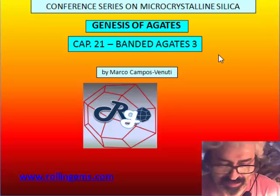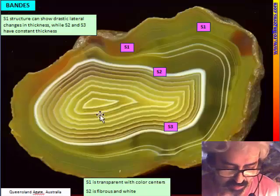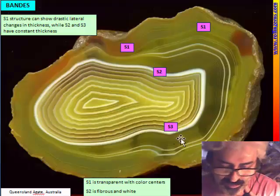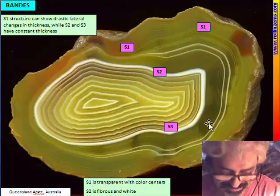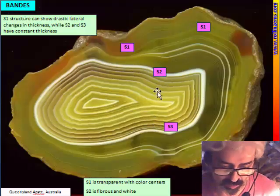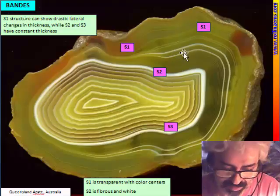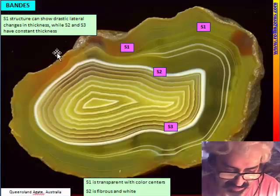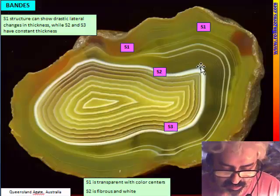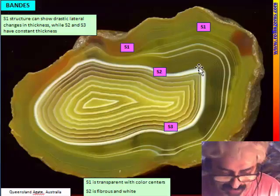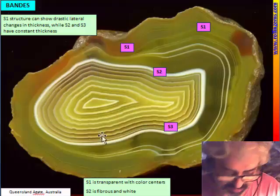We continue here talking about band agate, that is a very interesting argument. We start to make a deeper analysis of the complete stratigraphy of a nodule. We can distinguish easily the S1 facies with globular chalcedony that has lateral variation in thickness, and has two bands constituted by fibrous chalcedony that is white and more crystalline. For this reason they have more constant thickness all around.